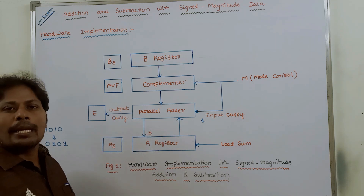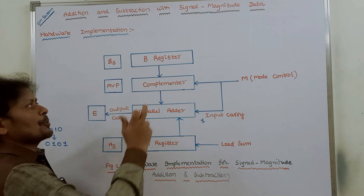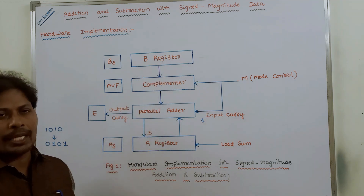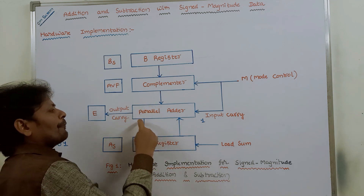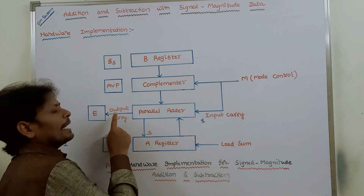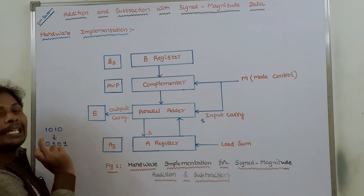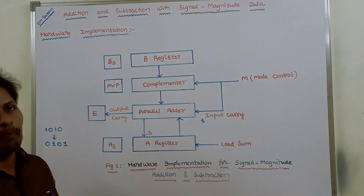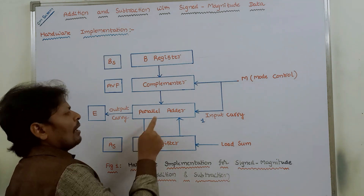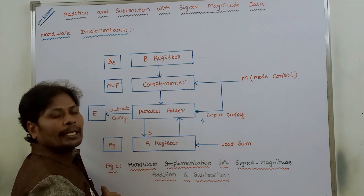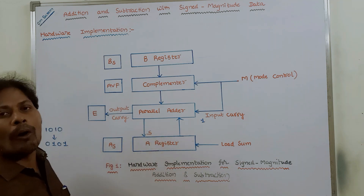The parallel adder is used for performing the addition operation between the two numbers stored in A register and B register. We use full adders to perform this addition operation. After performing the addition operation, if we get any output carry, that carry bit is stored in a flip-flop called E — E is called the extended flip-flop and is only used for storing the output carry bit. The result of the addition is stored in variable S, where S stands for sum.